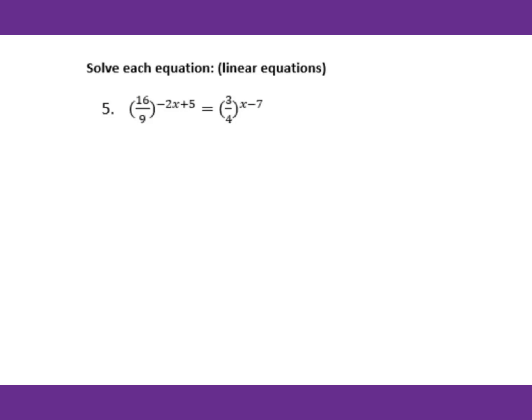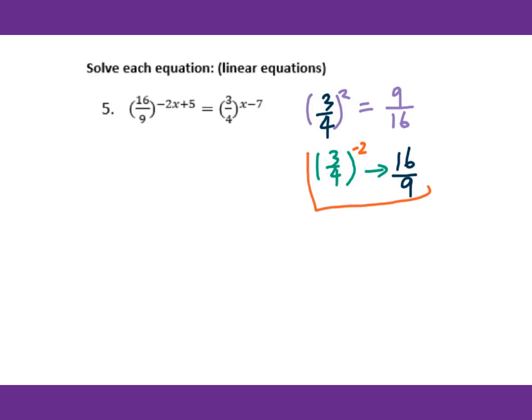Now let's go to number 5. Analyze the base — you have 3 over 4 and 16 over 9. We know that 3 over 4 squared is 9 over 16. The reciprocal of 9 over 16 is 16 over 9. So to get 16 over 9 from 3 over 4, you raise it to the negative 2nd power, since negative exponents mean reciprocal.